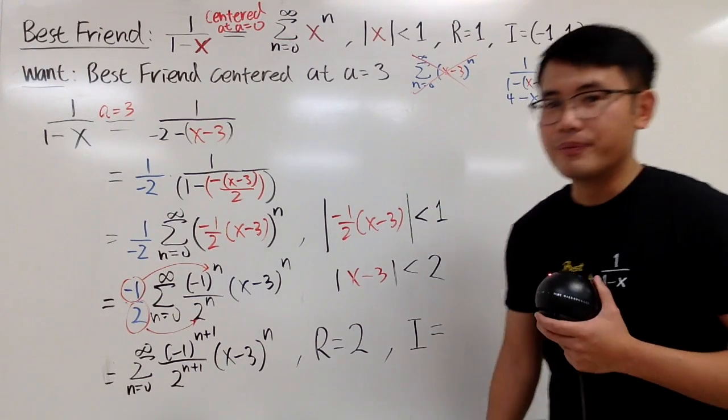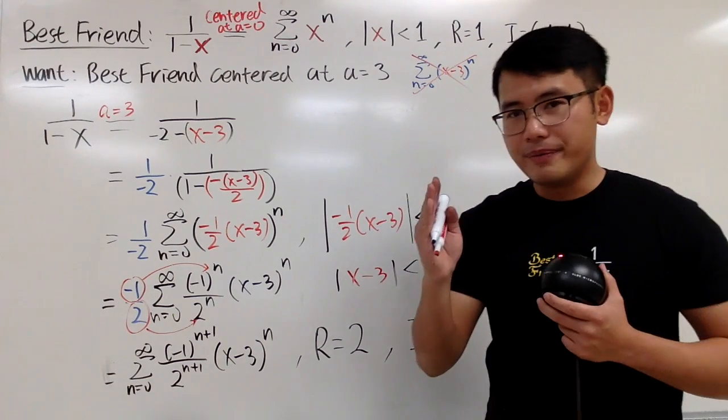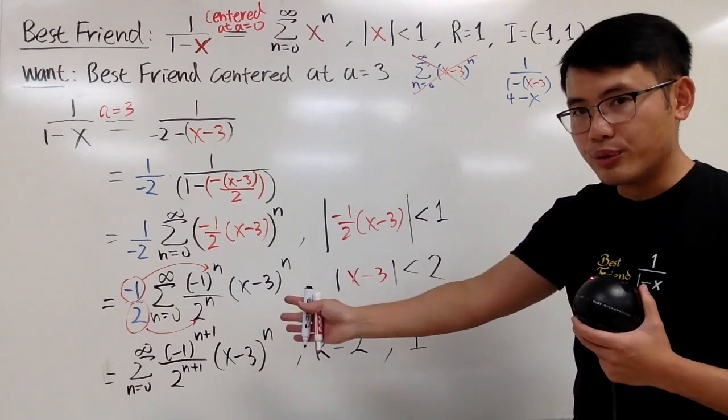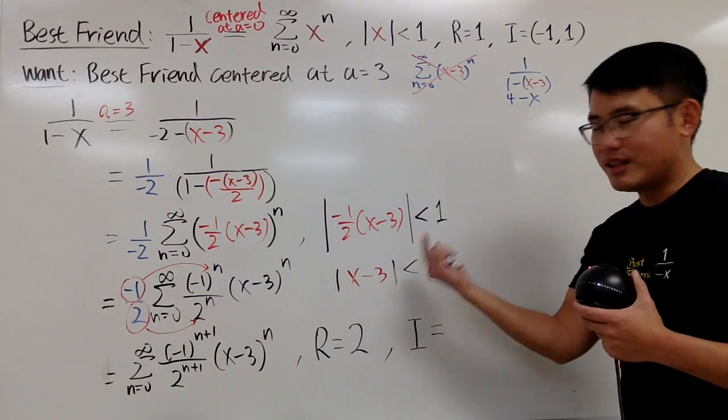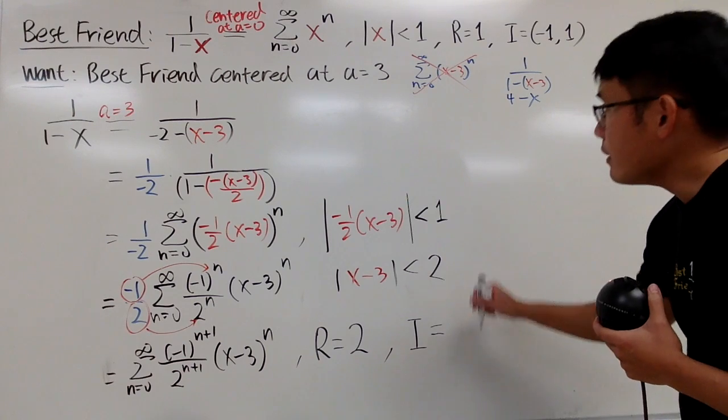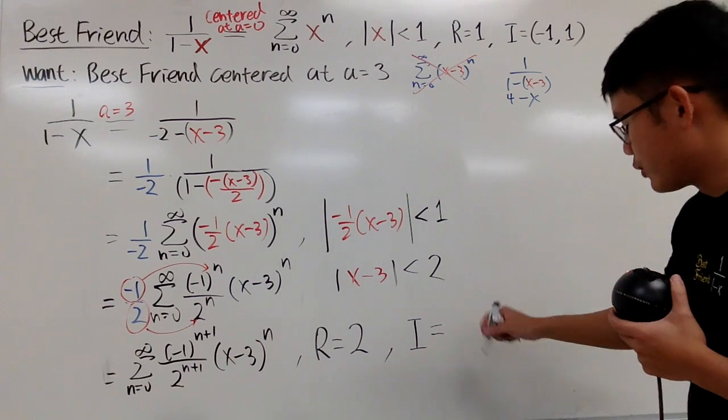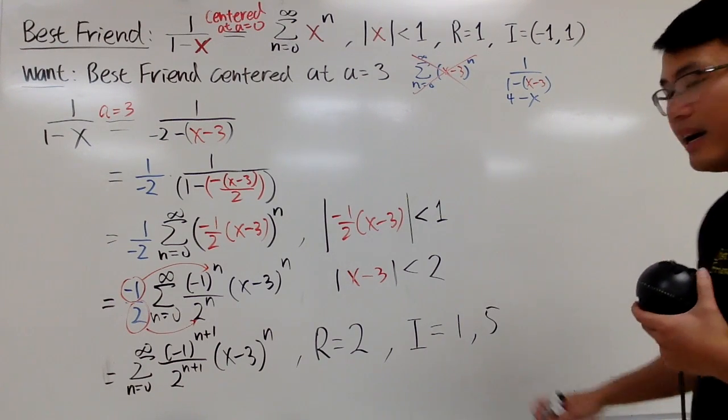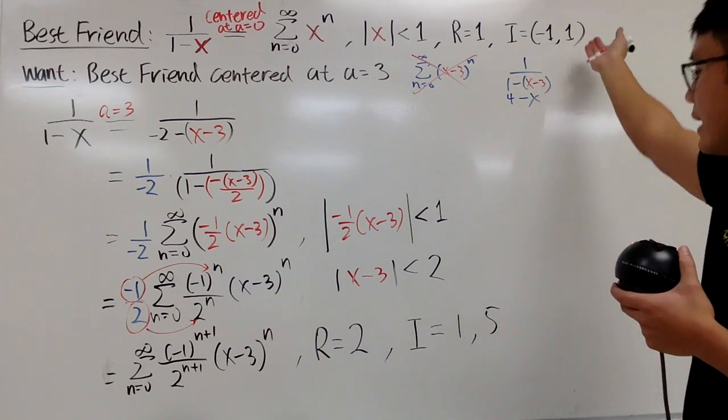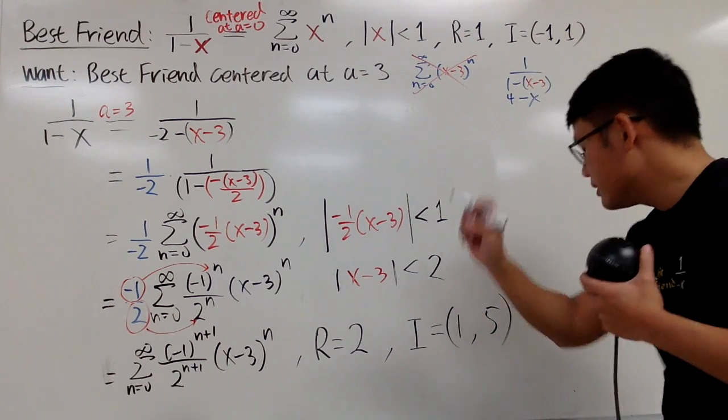And now, for the interval of convergence, this is what you do. The center is 3. You are going to go to the left, 2 units, and you are going to go to the right, 2 units. Well, you can solve this inequality up to you. So, 3, go to the left, 2 units, you have 1. Go to the right, 2 units, you have 5. And then, you don't include the endpoints, just like the original version. So, you put the parentheses, parentheses.